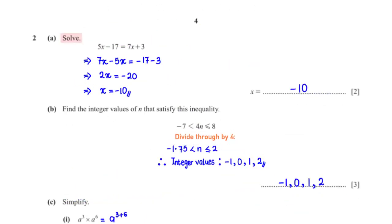Solve 5x minus 17 equals 7x plus 3. When we group like terms, 7x minus 5x is 2x, and minus 17 minus 3 is minus 20. When we divide both sides by 2, we get x equals negative 10.